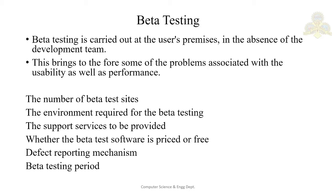Beta testing is carried out at the user's premises in the absence of the development team. The users are actual end users — for example, a WhatsApp beta version or a Facebook beta version. The aim of beta testing is to find problems associated with performance or usability. During test plan formulation, six aspects need to be decided upon for beta testing.